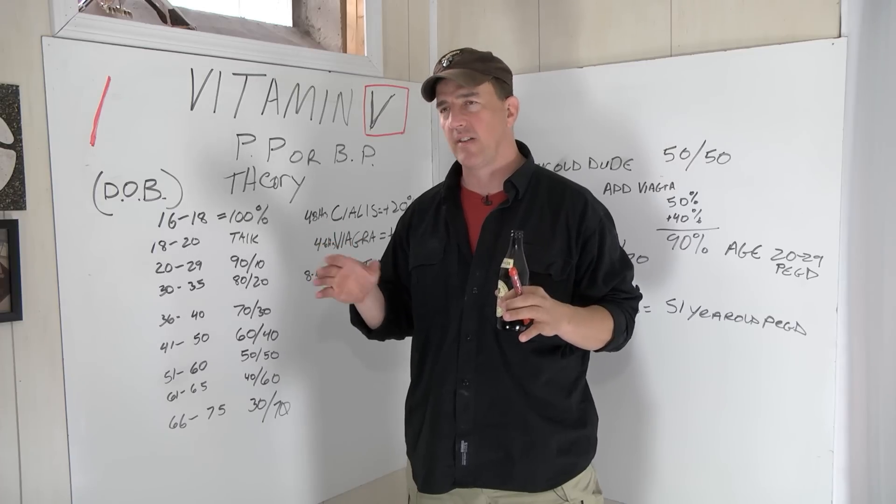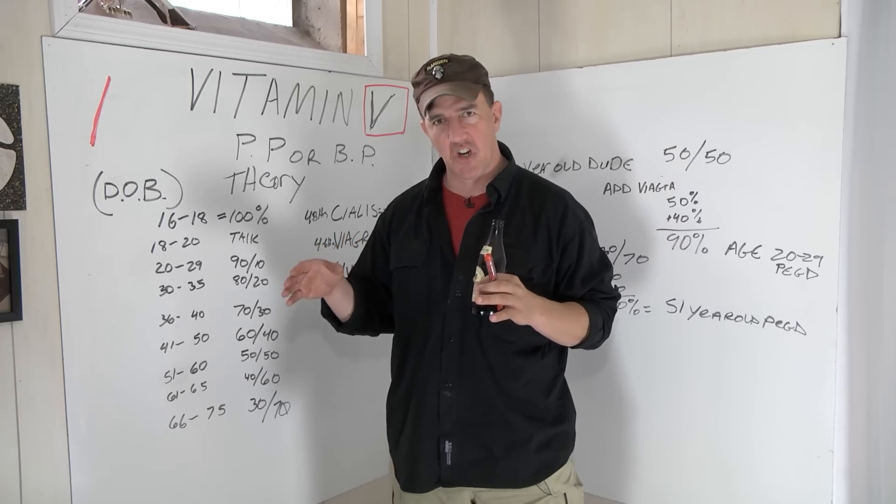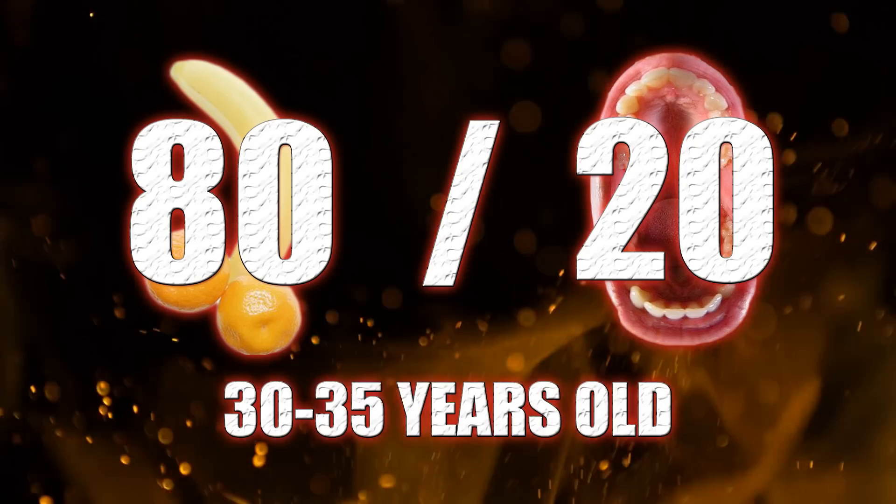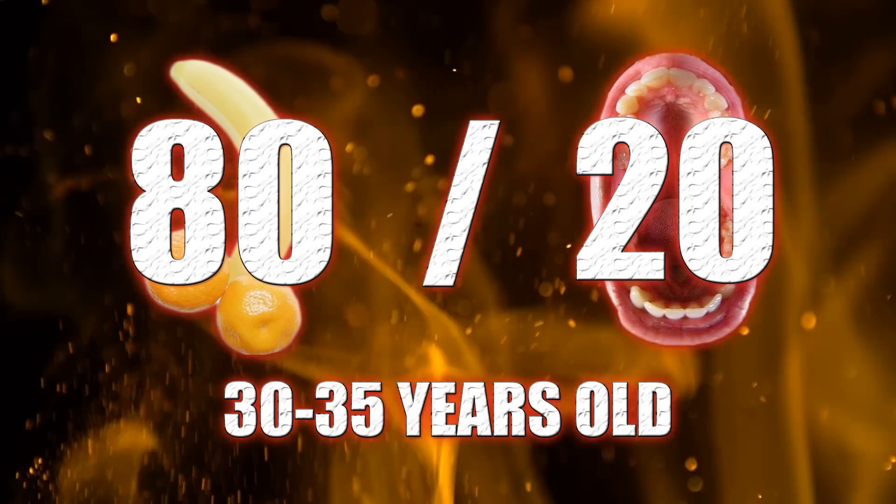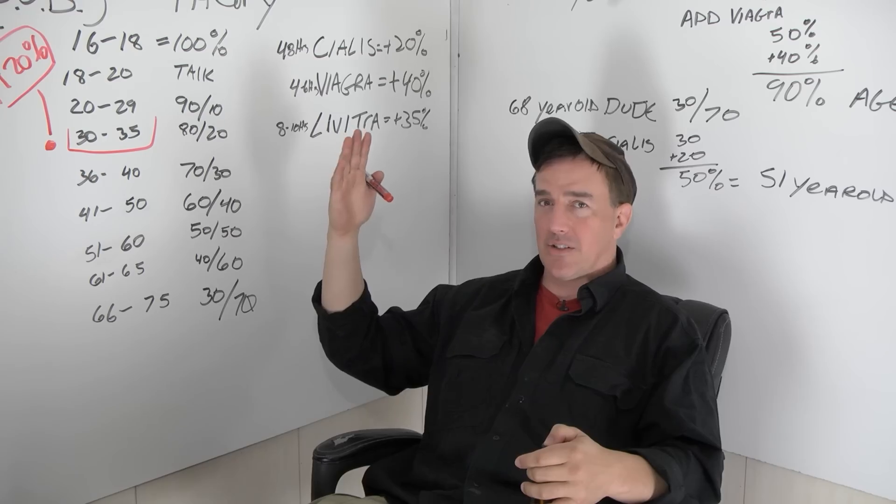Right around 30, 31, right in there, things start to change. Curve, it's very subtle. It comes on. You're operating at 80%. At 80, 20, you're still pretty good.